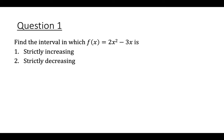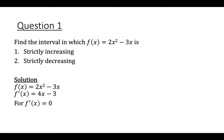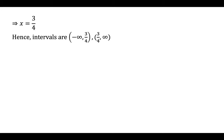Question number 1, find the interval in which f of x equal to 2x squared minus 3x is strictly increasing and strictly decreasing. f dash x equal to 4x minus 3. Put f dash x equal to 0, so 4x minus 3 equal to 0, giving x equal to 3 by 4. Intervals are minus infinity to 3 by 4 and 3 by 4 to infinity.